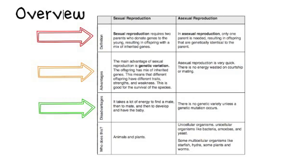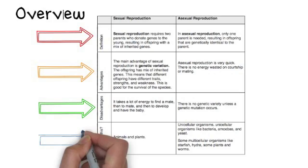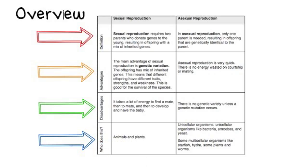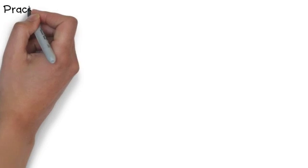The disadvantage of asexual reproduction is that there is no genetic variation. This is why Lysol can kill 99.9% of germs — it's only that 0.1% that had a mutation. Sexually reproducing species are usually plants and animals. Asexually reproducing species include unicellular organisms like amoebas, bacteria, and yeast, as well as some multicellular organisms like starfish and some worms.